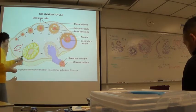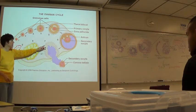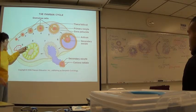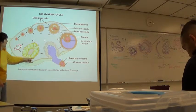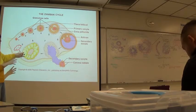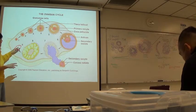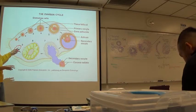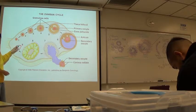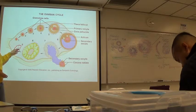Especially with the changes to the theca internus cells — these are theca externus cells shown up here — we have a corpus luteum, and then without fertilization occurring, it forms a corpus albicans. So you count back to how many months you've ovulated, and that's how many corpus albicans you have in your ovary.